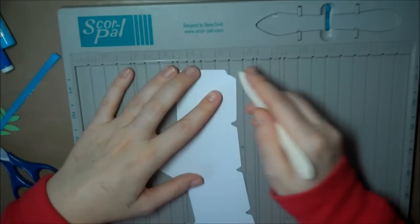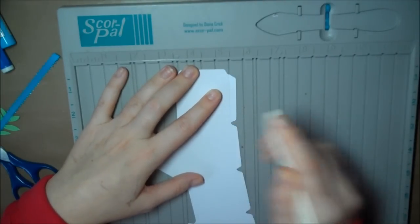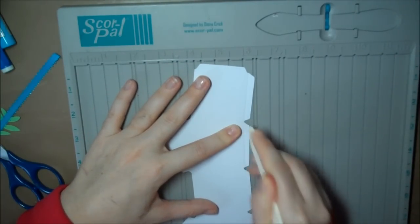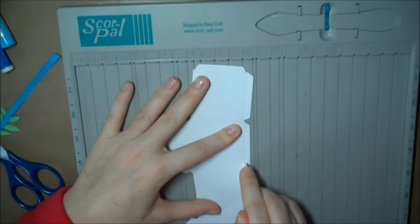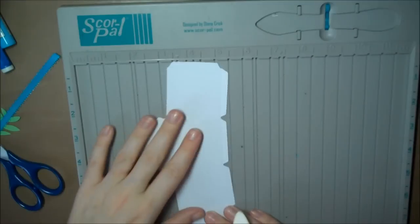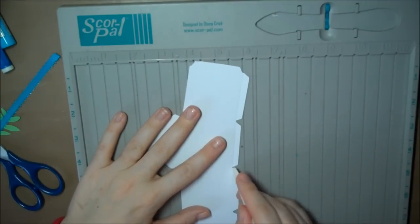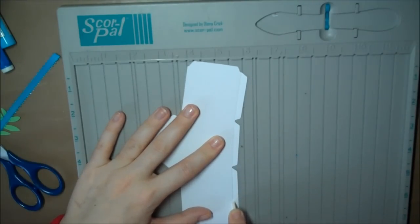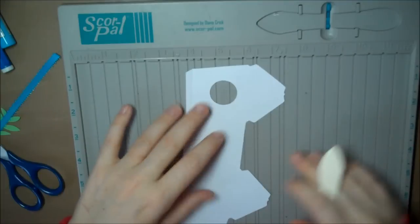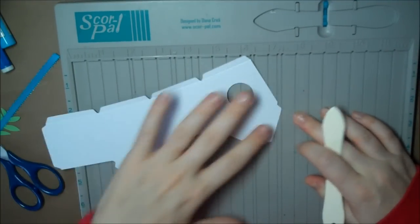So what you just do, I'm using my score pal and I'm just scoring where all the tabs are and just taking my time so that you can see and line everything up. Do the roof here.